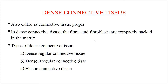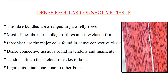In dense regular connective tissue, fiber bundles are arranged parallel to each other; most fibers are collagen with a few elastic fibers, and fibroblast cells are present. It is found in tendons and ligaments. Tendons attach skeletal muscles to bones, while ligaments attach one bone to another.